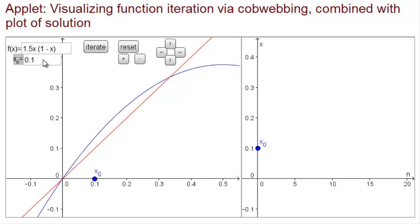We know if we start exactly at an equilibrium what will happen. So if we start at x equals zero and we iterate, we will stay right at x equals zero forever.